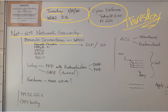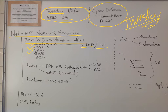We spent most of the day talking about branch connections, WANs. We talked about remote access, ISPs, service providers, PPP over Ethernet, and virtual private networks. We talked about GRE tunnels. We did not talk about BGP — we'll have to do that on Thursday.